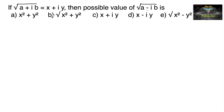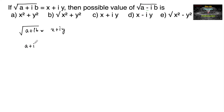If square root of (a + ib) is equal to x + iy, find the possible value of square root of (a - ib). Given that √(a + ib) = x + iy, this can also be written as a + ib = (x + iy)².